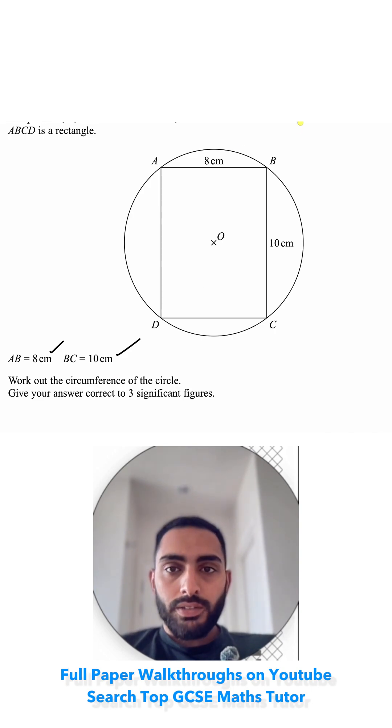Work out the circumference of the circle. Give your answer correct to three significant figures. Circumference of the circle just means the perimeter around the edge of the circle, so we're trying to find what is the perimeter of this circle. How could we do that? What is the formula for circumference of a circle? It's C = πd (cherry pie delicious), and the d stands for diameter.